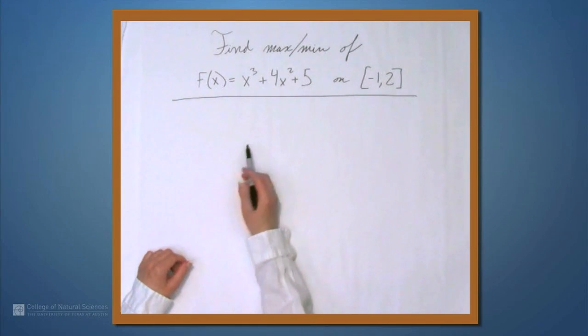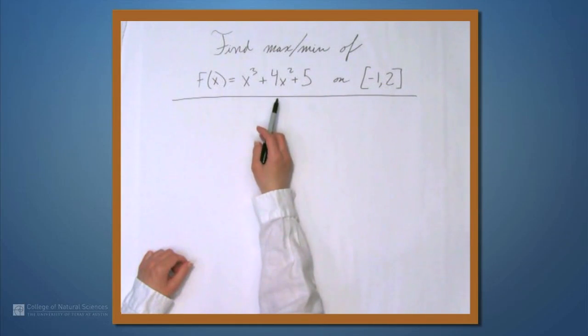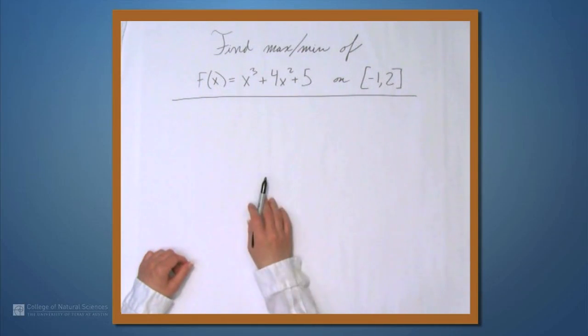So, we're here at the example table, and in this video, we're going to find the maximum and minimum values of the function x cubed plus 4x squared plus 5 on the interval negative 1 to 2.